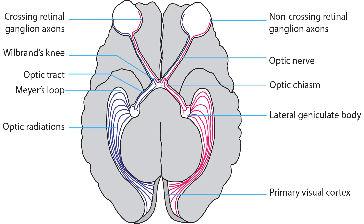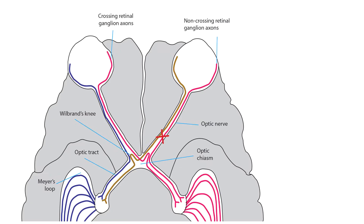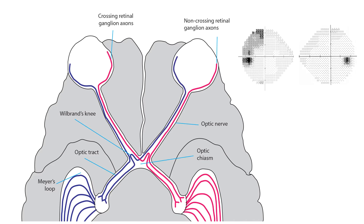Three patterns of visual field loss occur with lesions in the region of the optic chiasm. Damage to the optic nerve as it approaches the optic chiasm causes a unilateral temporal hemianopia in the ipsilateral eye. This phenomenon occurs because the nasal crossing axons coming from the eye on the side of the lesion are especially vulnerable. Often the eye with the temporal hemianopia also has a nerve fiber bundle defect.